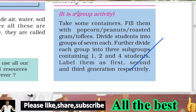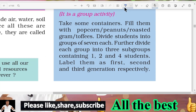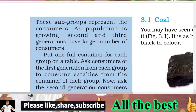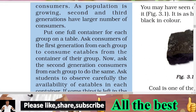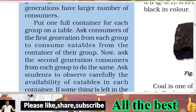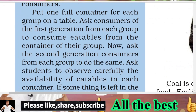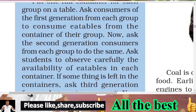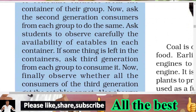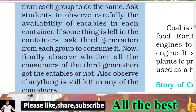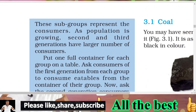Mark the containers accordingly. These subgroups represent the containers. As the population is growing, the second and third generation have a large number of consumers. Put one full container for each group on a table and ask consumers of each generation to consume eatables from the containers.